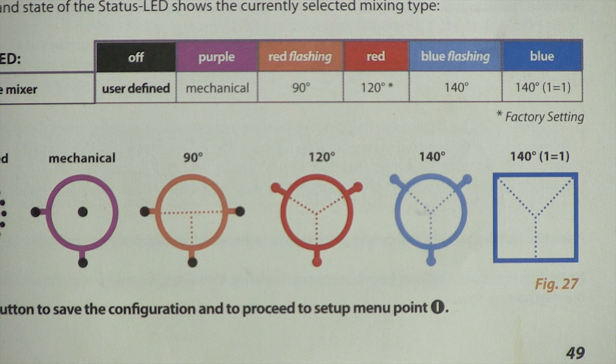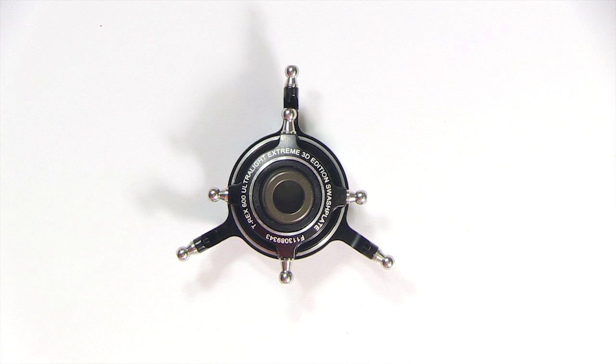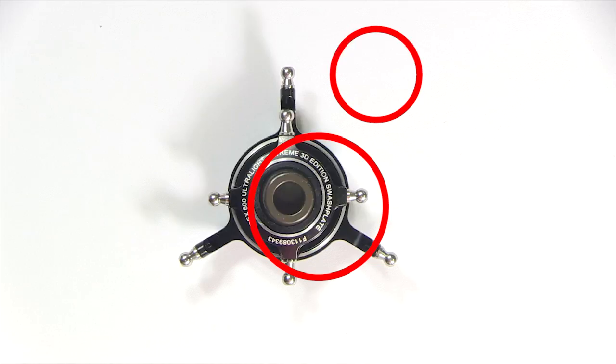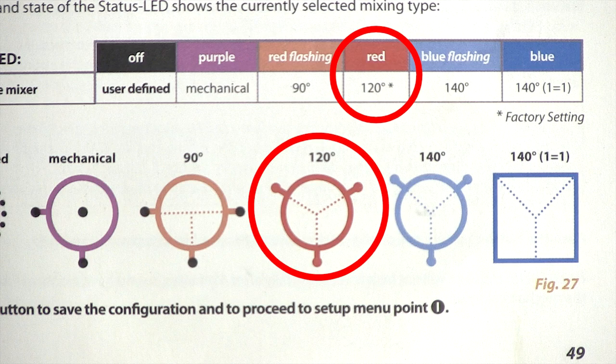If you aren't sure, look at this swash plate. It has three points on the outside ring and they're spaced 120 degrees apart. It doesn't matter if your elevator is in the front or back, you still choose 120.